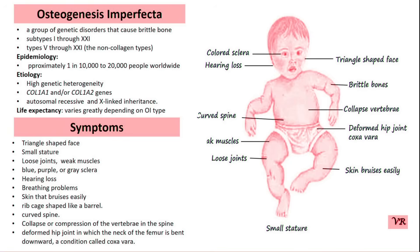Some individuals with OI, particularly those with more severe forms, experience hearing loss due to middle ear abnormality. Regular hearing assessments should be done, and hearing aids or other assistive hearing devices may be recommended. Pain-relief medications such as acetaminophen or non-steroidal anti-inflammatory drugs can help manage discomfort from fractures or other bone-related issues. In severe cases, stronger pain management strategies including opioids or nerve blocks may be used temporarily under medical supervision.